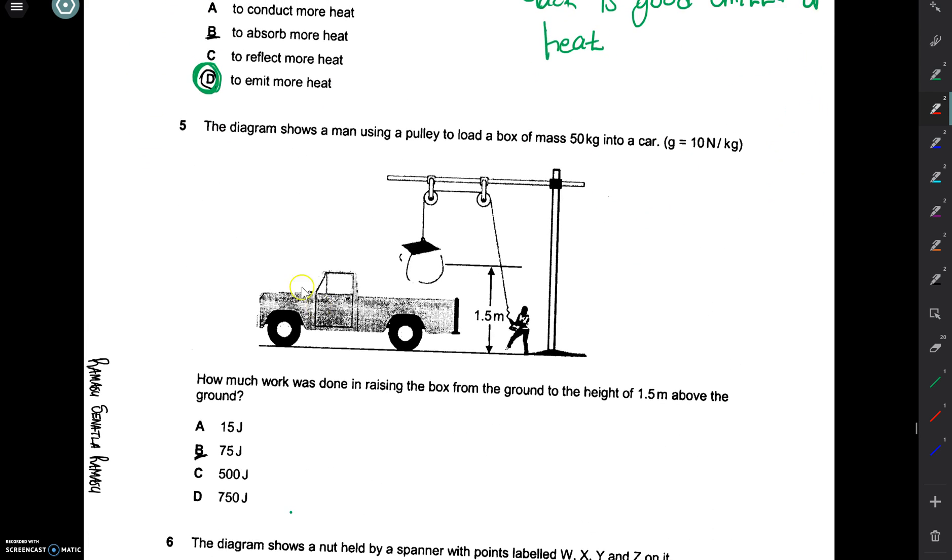Question 5 says. The diagram shows a man using a pulley to load a box of mass 50 kg into a car. Take g as 10 Newtons per kilogram. How much work was done in raising the box from the ground to the height of 1.5 meters above the ground? You use the formula potential energy equals mass times gravitational field strength times height.